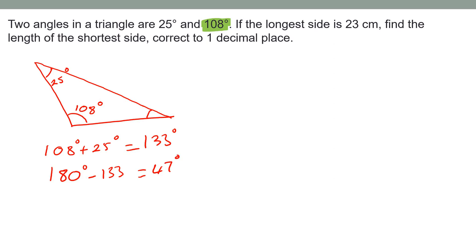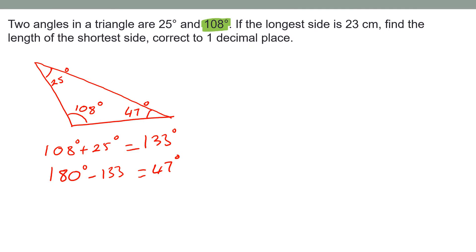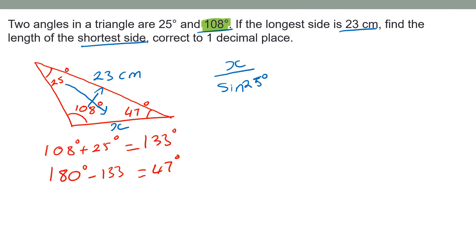The longest side of 23 centimeters is opposite the largest angle of 108 degrees. The shorter side, x, is opposite the smallest angle of 25 degrees. Because more than two angles are given, we use the sine rule. So: x / sin 25° = 23 / sin 108°.